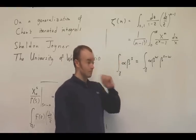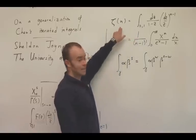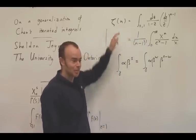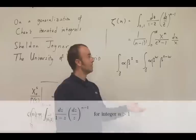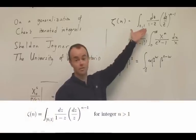The motivating example comes from the Riemann zeta function, which at positive integers admits an expression as an iterated integral of the following kind.